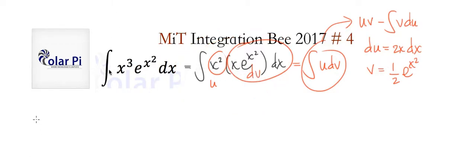This is the same as our integral. We can write it in this form. So uv to start: u is x squared and v is a half e to the x squared, so a half x squared e to the x squared is one way to write that, and then